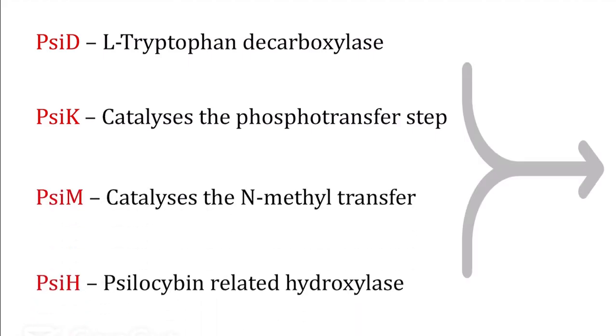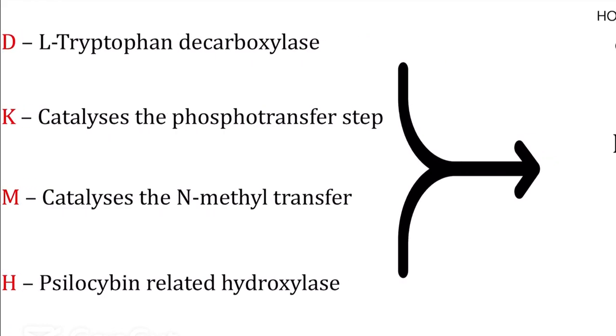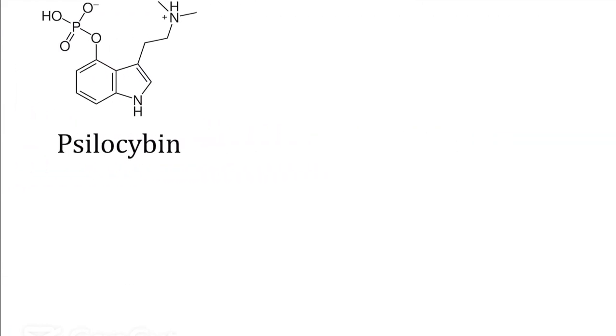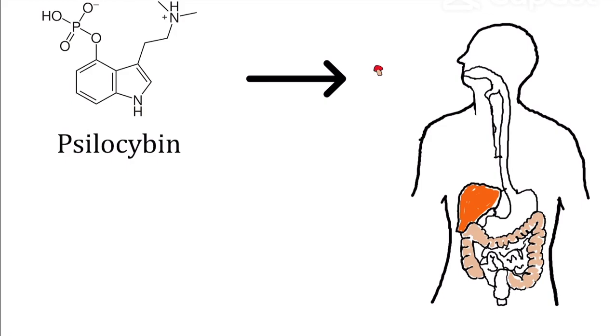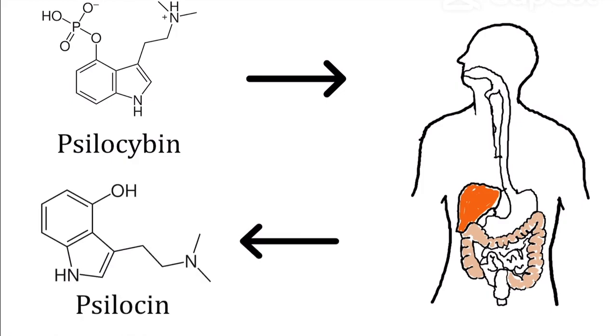Psilocybin is the chemical that gives hallucinogenic mushrooms their magic properties. When psilocybin is consumed by humans, it is dephosphorylated within the intestine and liver by alkaline phosphatase to become psilocin, which